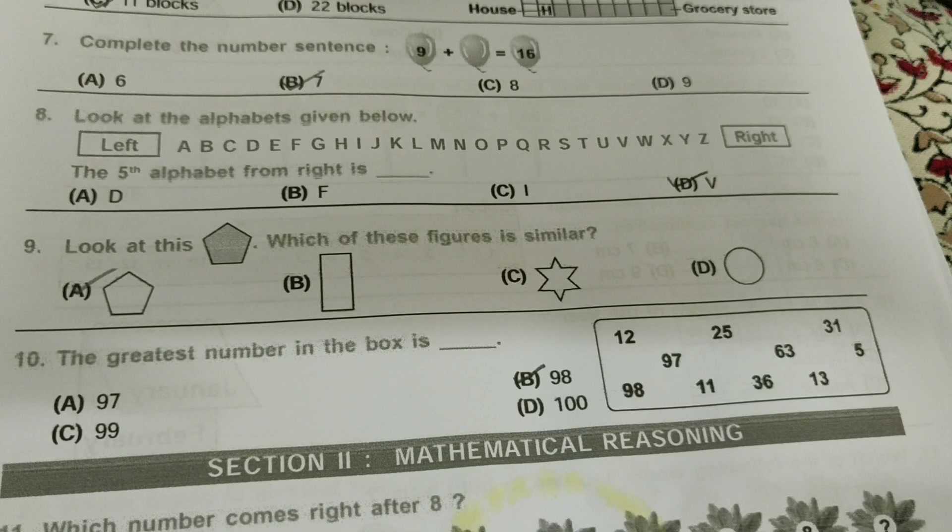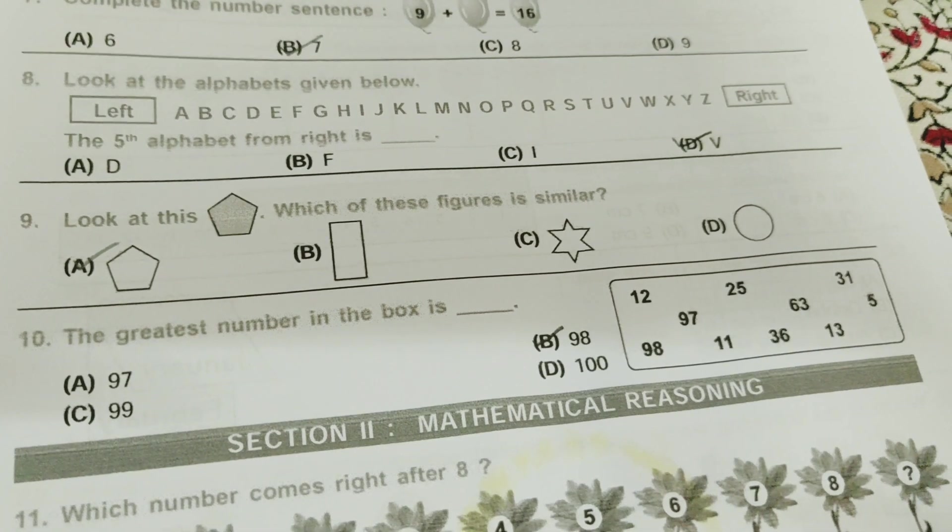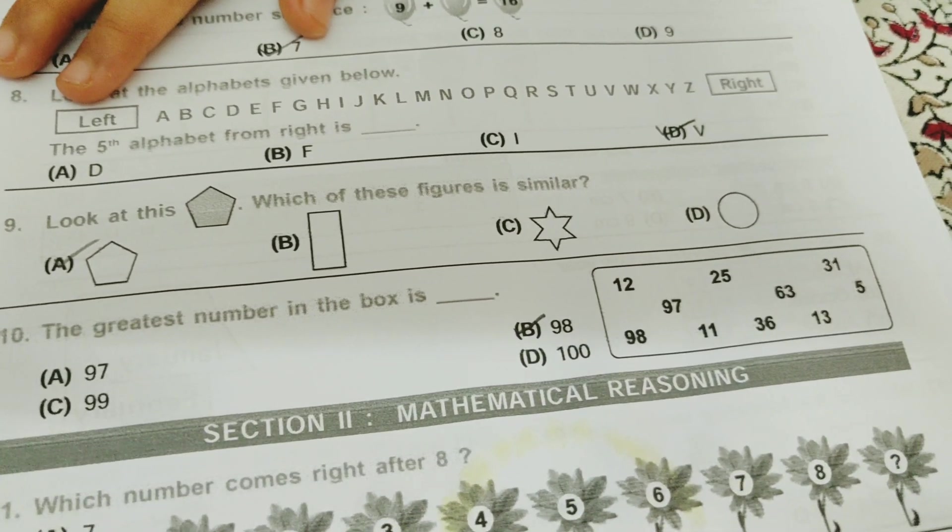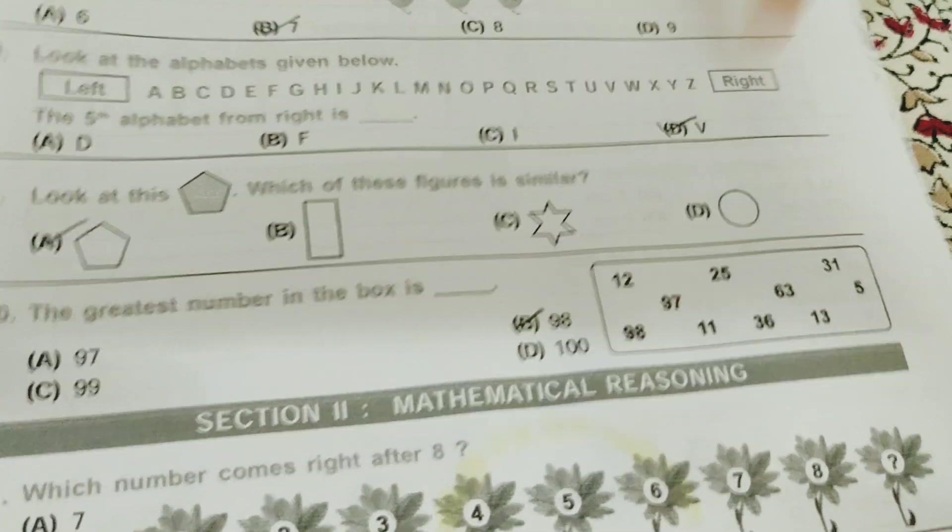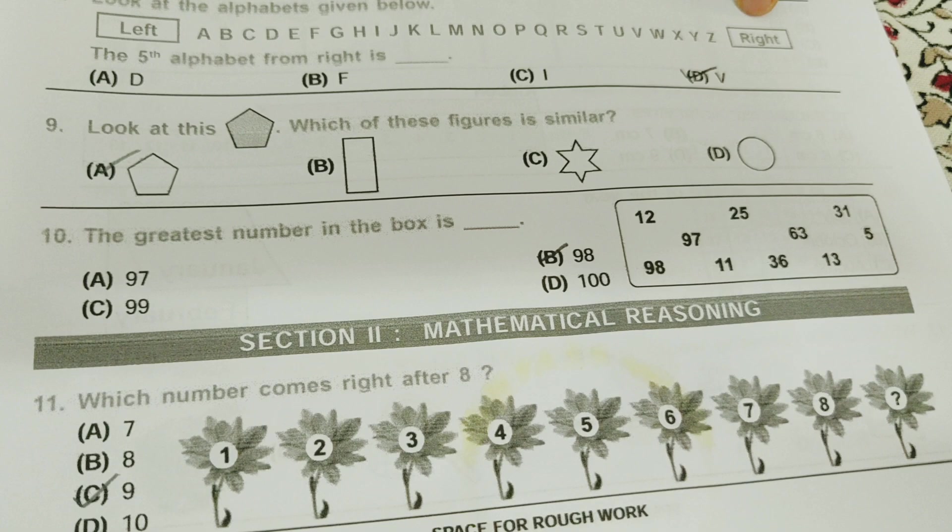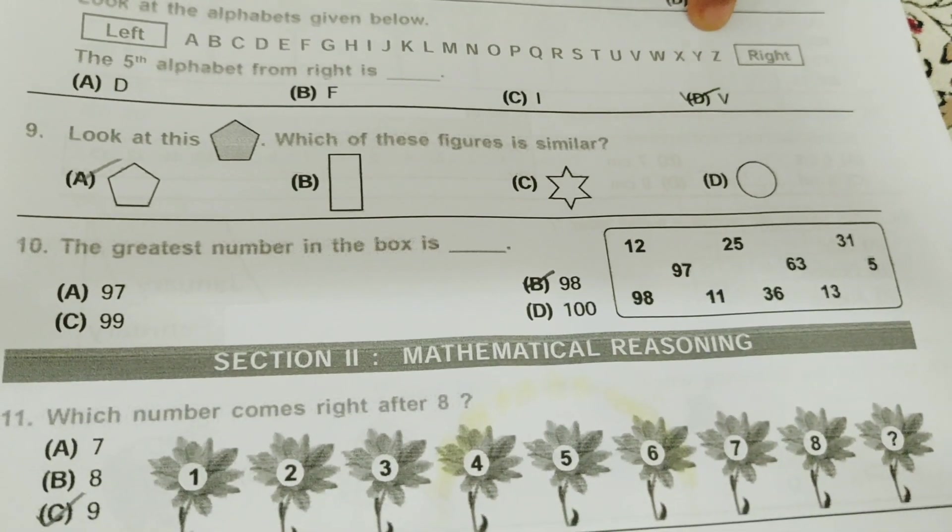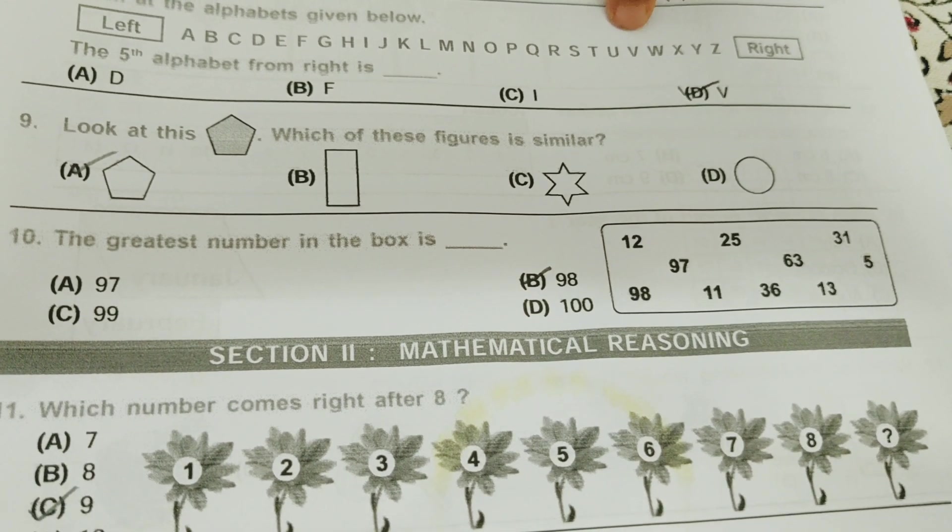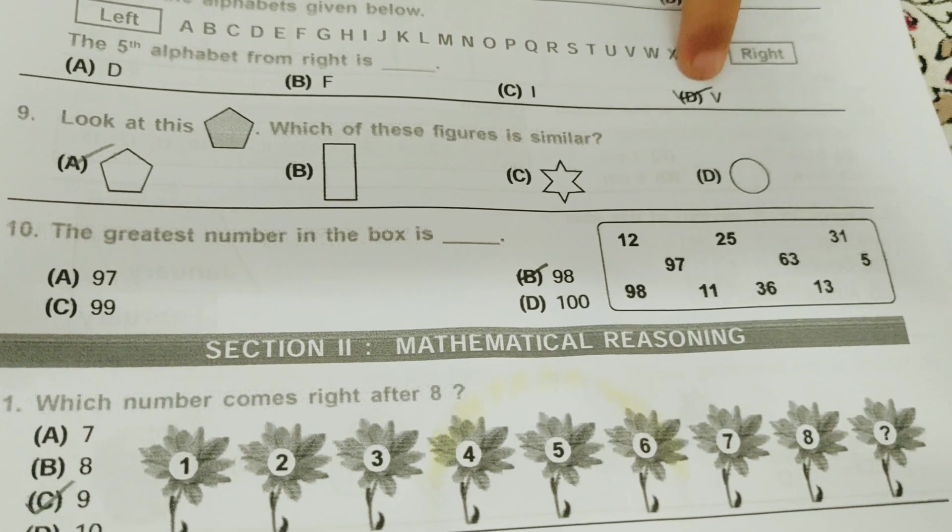Look at the alphabets given below. Alphabets from A to Z. The fifth alphabet from the right is... So they also gave left and right. And they are asking the fifth alphabet from the right is dash. So it's very easy. Just one, two, three, four, you got the fifth one. Because V comes in five. The B bit.